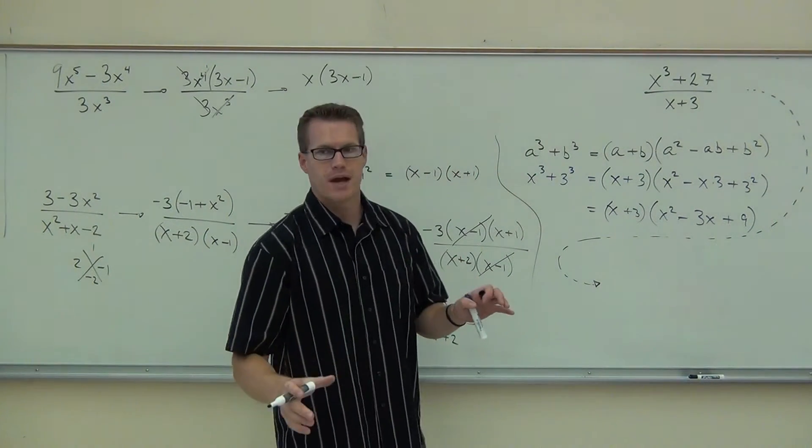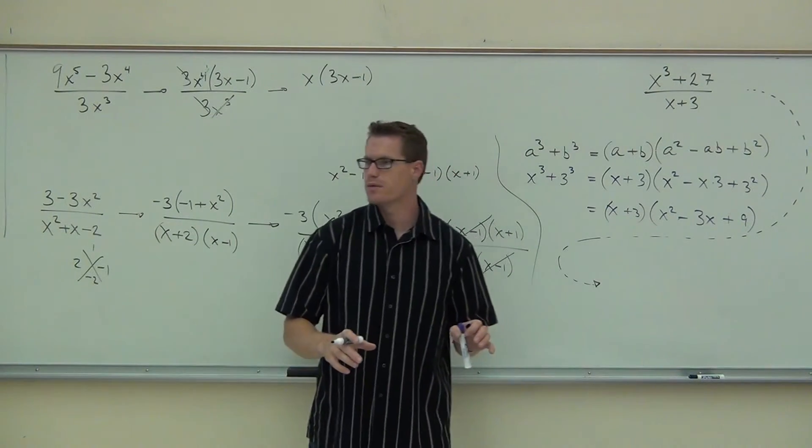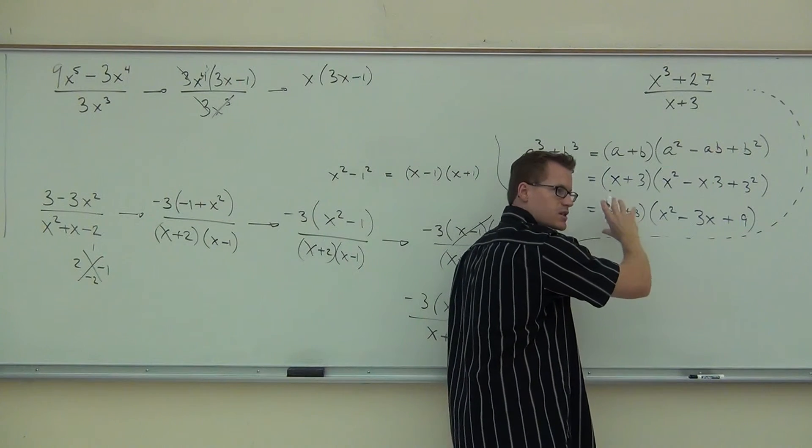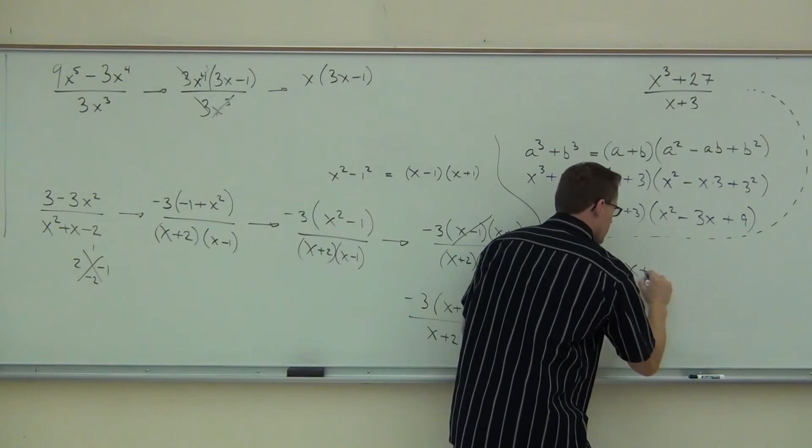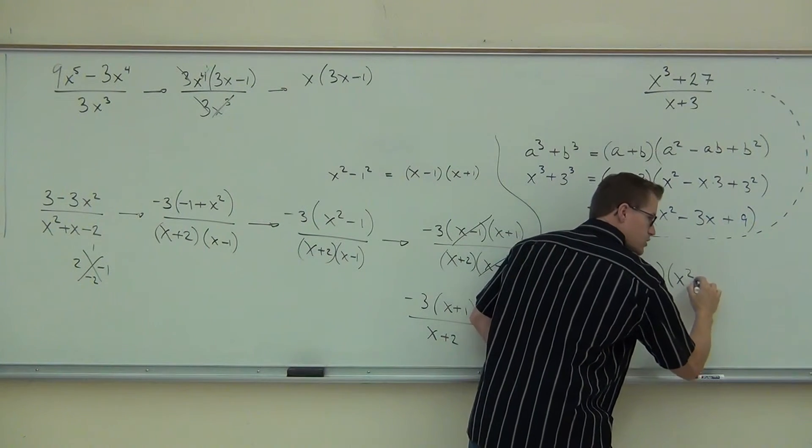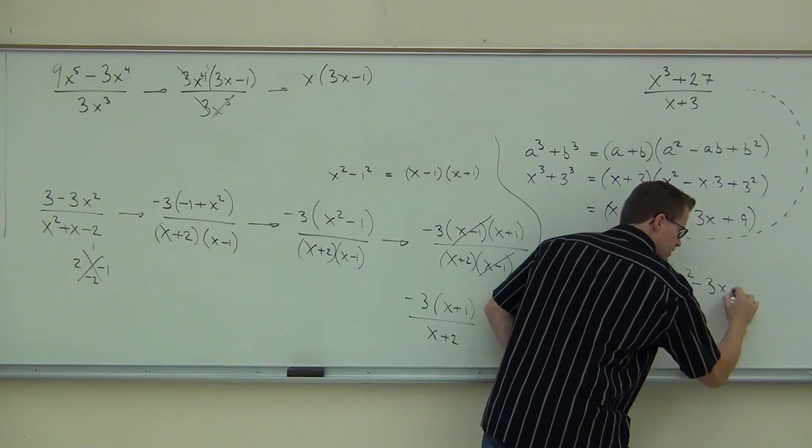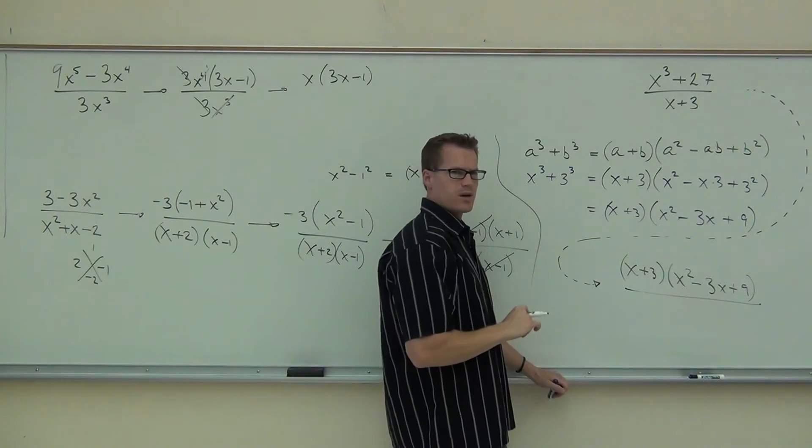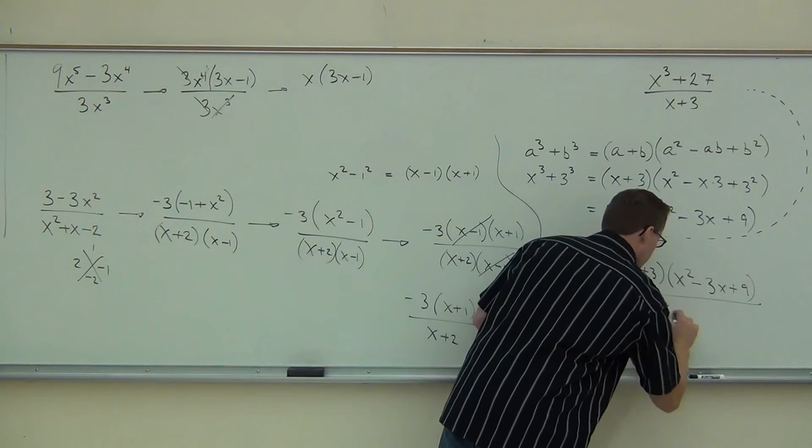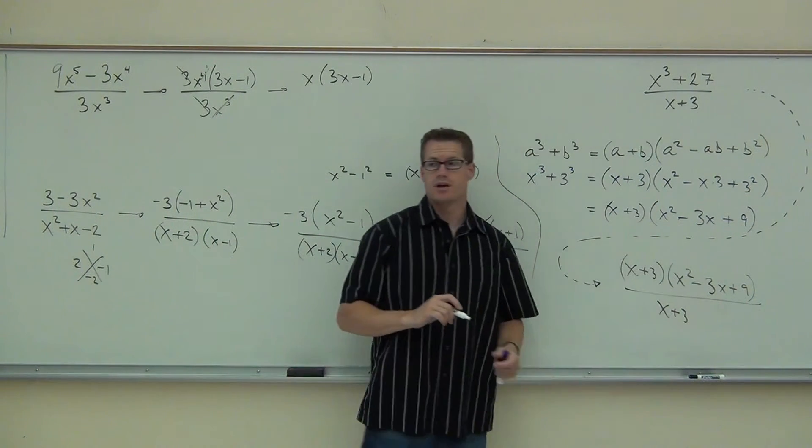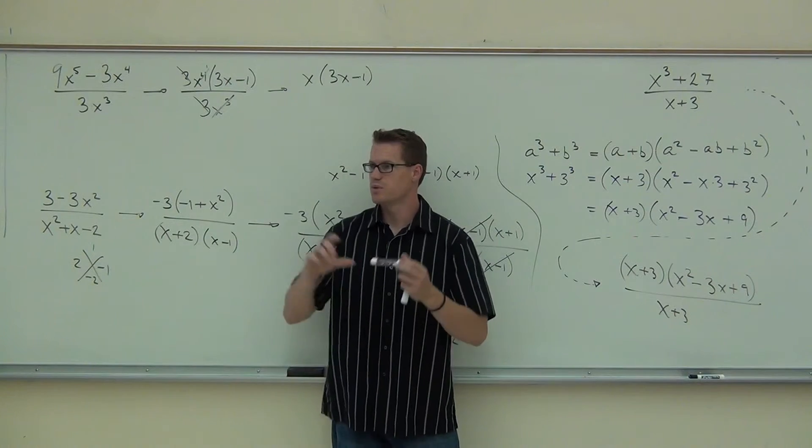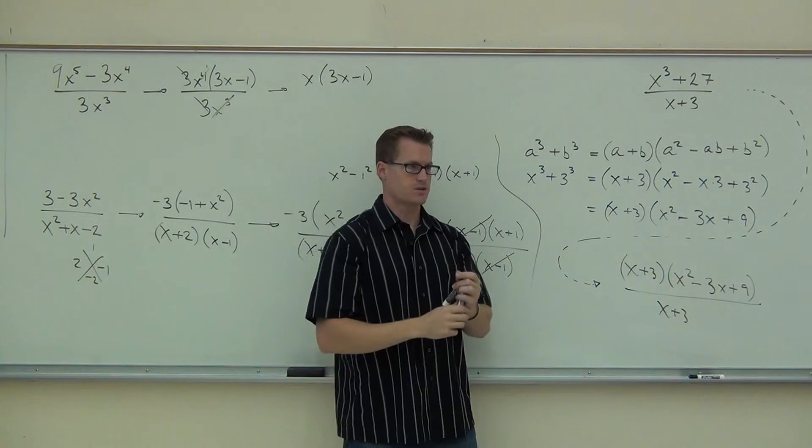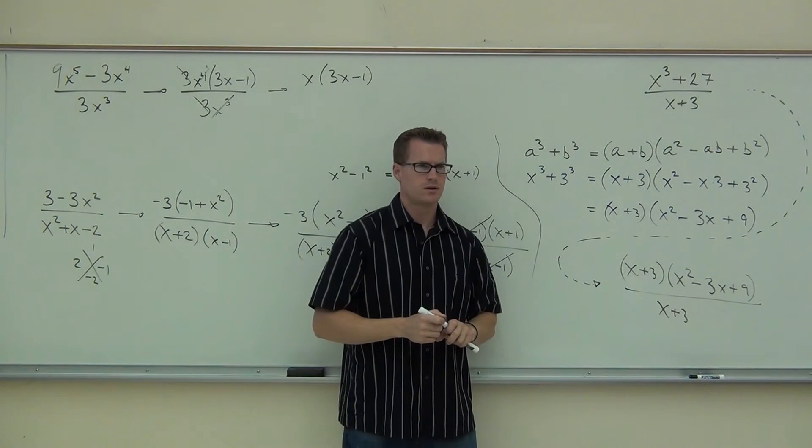That's how you use the sum of cubes idea. The difference of cubes is exactly the same. It's just this becomes a minus, a plus, and a plus for a difference of cubes. Sum of cubes, that's a plus. If this was a minus, these two signs would switch. That's the only difference there. So x + 3, that's done. x², well that's done. We're going to rewrite this: 3x. And at the very end, 9. So we have just completely factored the numerator. Can't go any further on this thing.